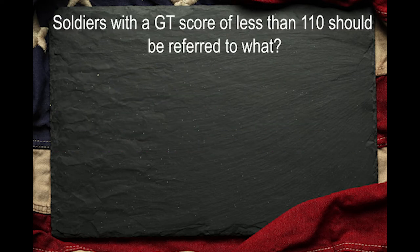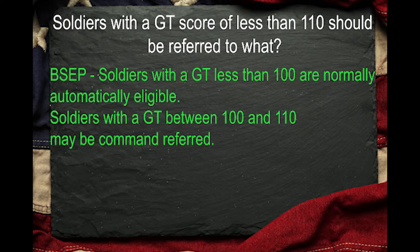Soldiers with a GT score of less than 110 should be referred to what? BSEP. Soldiers with a GT score less than 100 are normally automatically eligible. Soldiers with a GT score between 100 and 110 may be command referred.